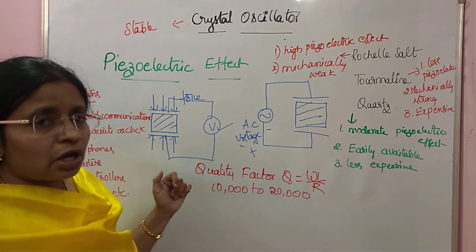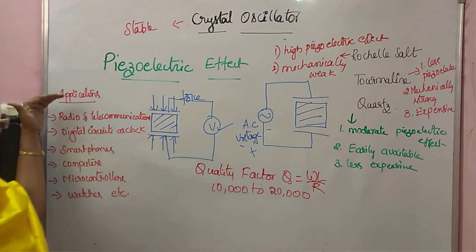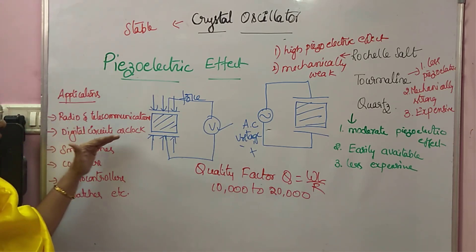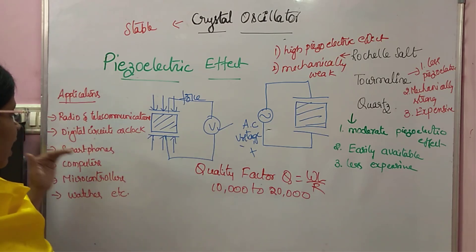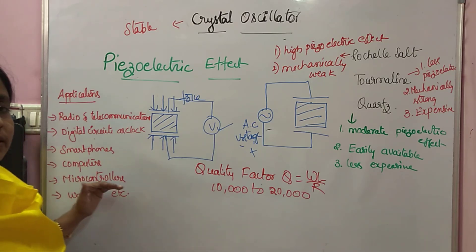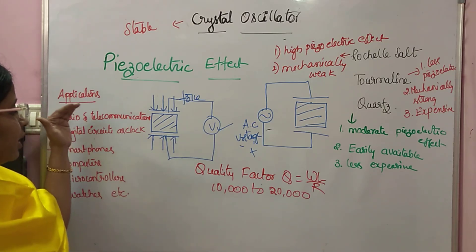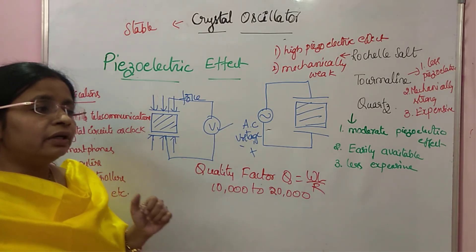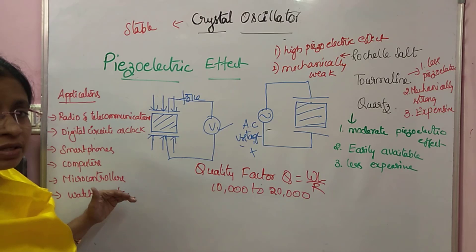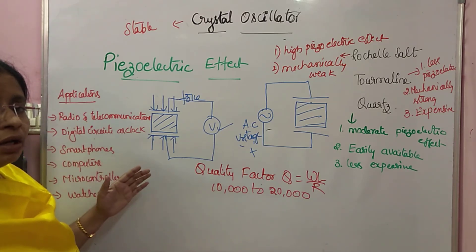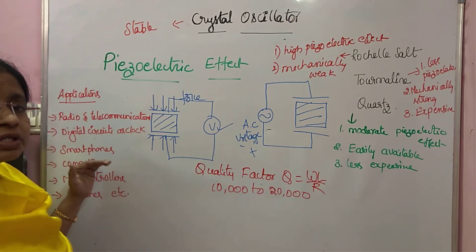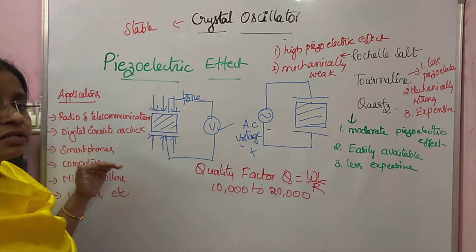What are the applications of the crystal oscillator? It is used in radio and telecommunications, in digital circuits as a clock, and in smartphones, computers, and microcontrollers to generate a clock. It is also used in watches for setting the time. In all these applications we need a clock which is very stable, so that all these circuits and devices work in sync.